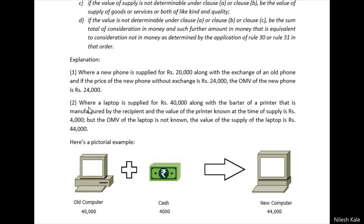Another example: a laptop is supplied for ₹40,000 along with the barter of a printer manufactured by the recipient. The value of the printer known at the time of supply is ₹4,000. The OMV of the laptop is not known. Therefore, the value of supply of the laptop will be ₹44,000, because ₹40,000 is the supply value in money and ₹4,000 is the printer value. Both are supplied in coordination with each other, so the total value is ₹44,000.